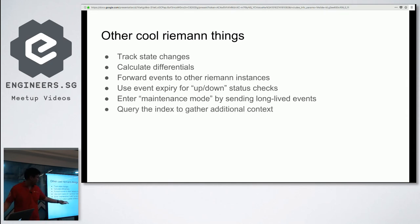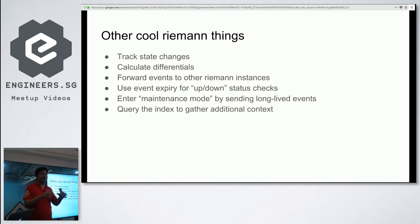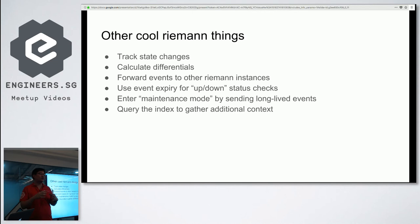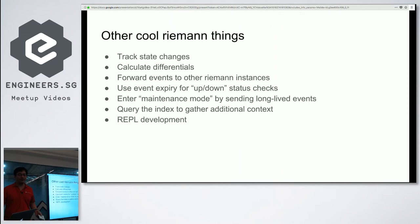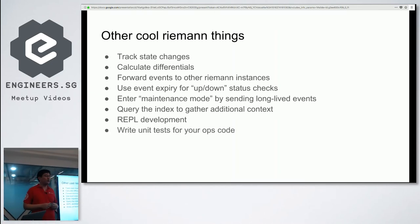You can query the index to gather additional context. For example, if you get a CPU alert on a host, you can query the Riemann index to gather not just the CPU usage, but also the memory usage, the number of connections, and the amount of disk space left, and pack all of that into your alert message. Because when you're getting woken up at 3am, you want as much information as possible without having to go digging for it. Riemann also supports full REPL development and has great support for writing unit tests.